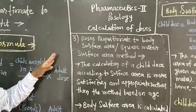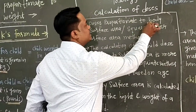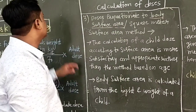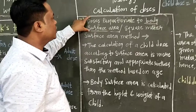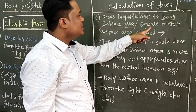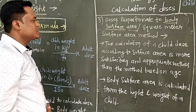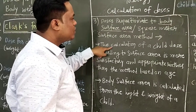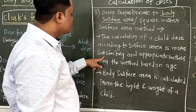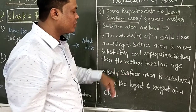Third, we look at doses proportionate to body surface area. The square meter surface area method for calculating child dose is more satisfactory and appropriate than the method based on age. The body surface area is calculated from the height and weight of the child.